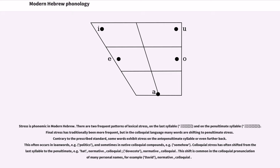Colloquial stress has often shifted from the last syllable to the penultimate, for example: 'hat' (normative vs colloquial), 'dovecote' (normative vs colloquial). This shift is common in the colloquial pronunciation of many personal names, for example, 'David' (normative vs colloquial).